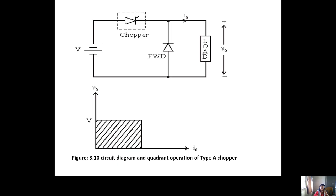When the supply is given to the chopper and it is turned on, current flows through the chopper and load, producing an output voltage. When the chopper is in open circuit, there is no current flowing from source to load, so the output voltage will be zero. When the chopper is on, the inductor in the load stores energy and discharges through the freewheeling diode, so the current will be continuous.